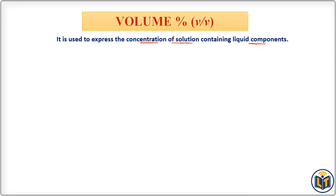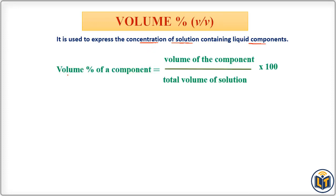Its formula is given as: volume percentage of a component is equal to the volume of the component divided by the total volume of the solution, and multiplied by 100. In case we have to express the volume percentage in terms of solute or solvent in a solution, the formula can be adjusted accordingly.